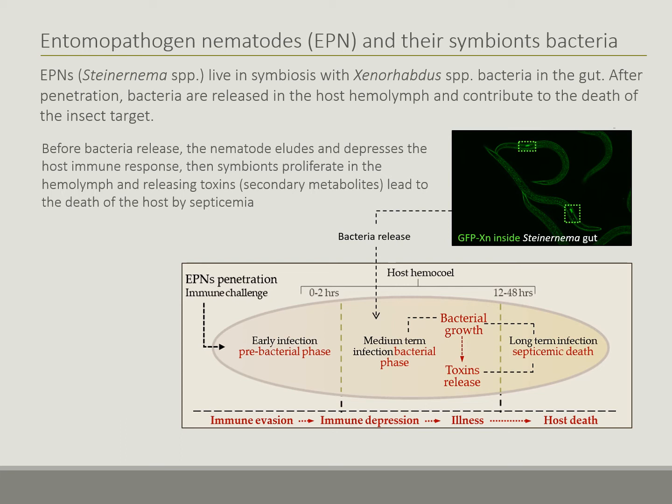The other bio-insecticide used in this study is the symbiotic bacterium of the entomopathogenic nematode Steinernema carpocapsae. Once penetrated into the haemocelic cavity of the target insect, it implements immune evasive and depressive strategies in the early stage of infection, but later releases its symbionts localized in a specific intestinal vesicle. Xenorhabdus symbionts thus contribute to the lethal effects of the bio-insecticide by means of their secondary metabolites, which play a key role in the death of the host.